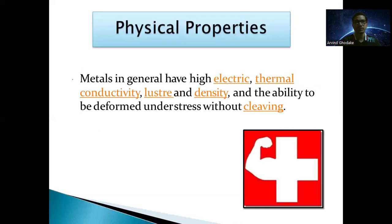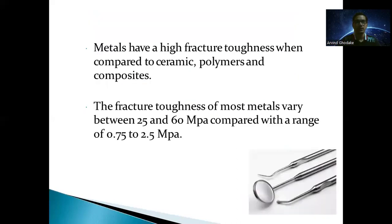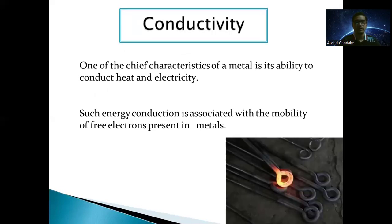Physical properties of metals: metals in general have good electrical and thermal conductivity, high density, and the ability to be deformed under stress without cleaving. Metals have a high fracture toughness compared to ceramics, polymers, and composites — the fracture toughness of most metals varies between 25 to 60 MPa, compared with roughly 0.75 to 2.5 MPa for others. One chief characteristic of metals is their ability to conduct heat and electricity, associated with the mobility of free electrons present in the metal.